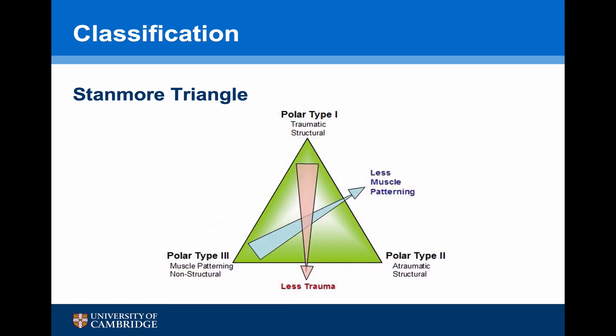An individual's instability can be represented anywhere within the area of the triangle. For example, a patient with polar Type 1 traumatic structural instability, particularly if it has been ongoing for some time, will develop an element of compensatory muscle patterning. Similarly, most patients with atraumatic structural instability will have an element of muscle patterning. As patients recover they will move around the triangle, and therapy is aimed at correcting the various components of their instability.